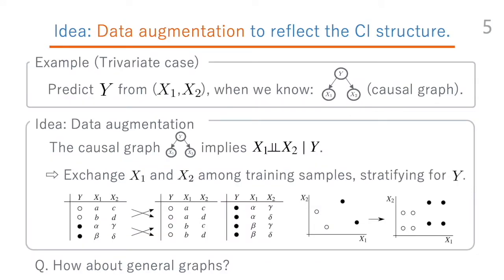We describe the key idea of the proposed method in this trivariate example. Let's consider, for example, the case that we are predicting y from x1 and x2, and we assume that we know that the data distribution follows this causal graph. In this case, we can infer that x1 and x2 are conditionally independent given y. To use this knowledge, our simple idea is to shuffle the values of x1 and x2 while conditioning on y in the training data.